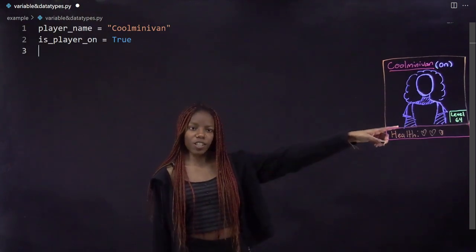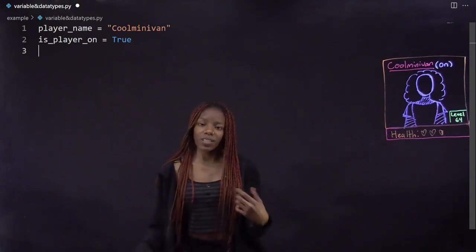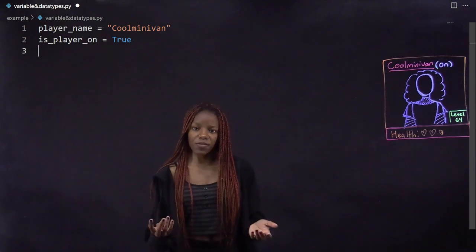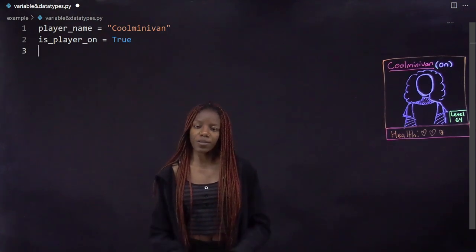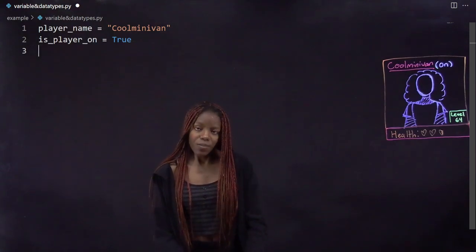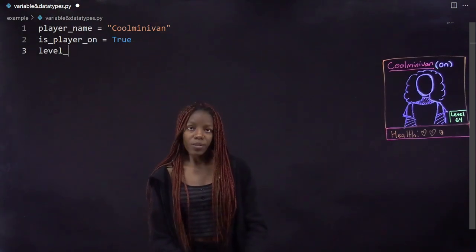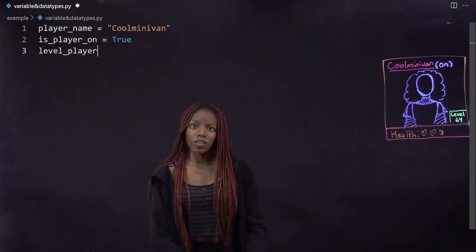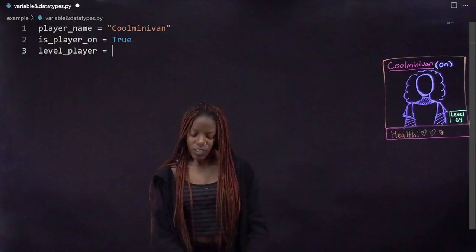Another thing we can note is her player level. Currently she's level 64, and 64 is a whole number, so we can use an integer variable. So let's start it off like we always do: naming it, we'll just do level_player, and then 64.